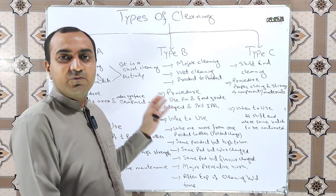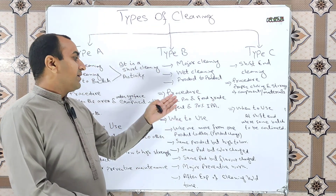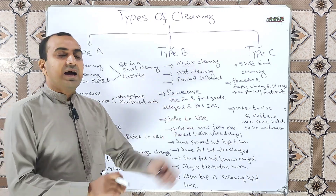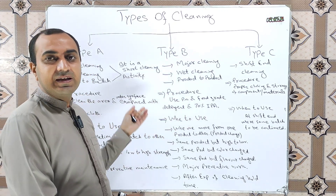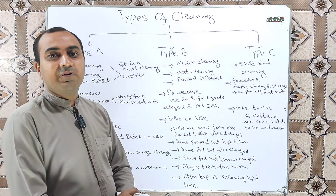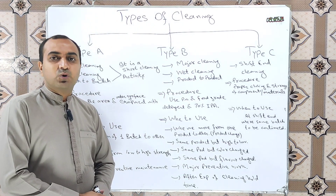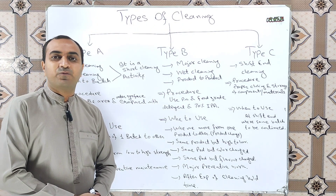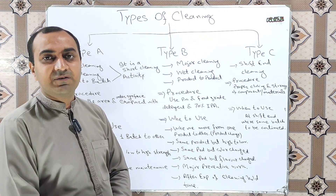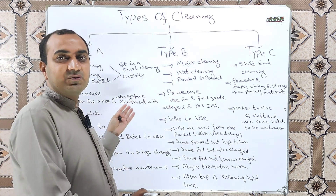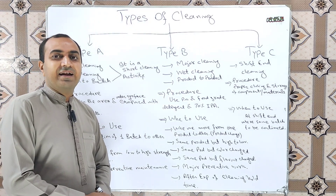Since Type B is wet cleaning, we use purified water, food grade detergent, and 70% IPA for the cleaning purpose. We perform this cleaning activity to wash our whole area and equipment thoroughly, and after that we take rinse samples for pH and conductivity testing to ensure there is no leftover of the previous product.